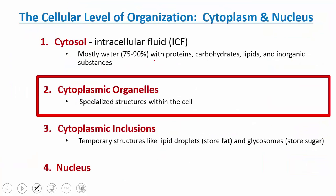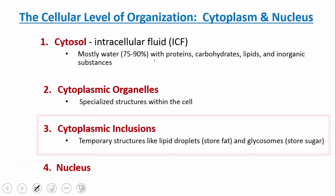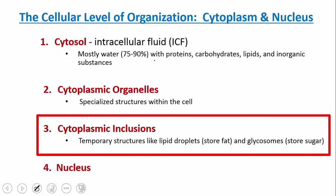Let's talk about things called cytoplasmic inclusions. These are temporary structures — things like lipid droplets to store fat, and glycosomes to store sugar or carbohydrates. Many terms in biology come from Greek or Latin. The word 'glyco' in Greek means sweet or sugary, so whenever you see 'glyco' in any term, you're talking about carbohydrates.